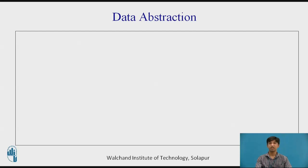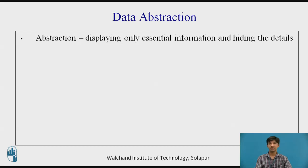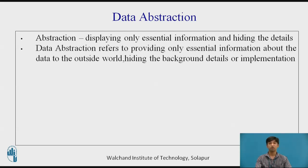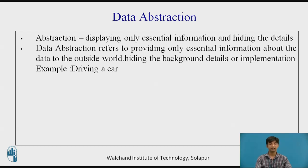Data abstraction is one of the most essential and important features of object-oriented programming in C++. Abstraction means displaying only essential information and hiding the details. Data abstraction refers to providing only essential information about the data to the outside world, hiding the background details or implementation. Consider the example of a man driving a car: the man only knows that pressing the accelerator will increase the speed of the car or applying brakes will stop the car. But he does not know how pressing the accelerator actually increases the speed, nor the inner mechanism of the car or the implementation of the accelerator, brakes, etc. This is what abstraction is.